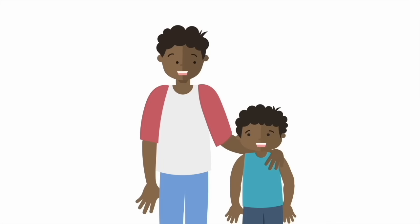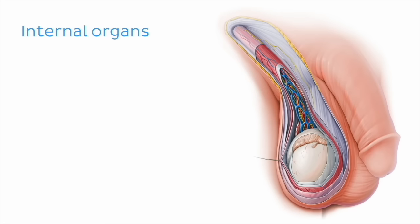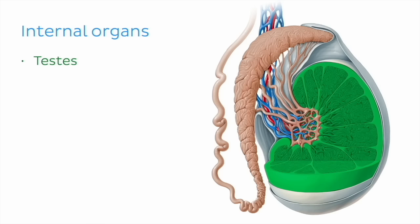Go ahead and give yourself a pat on the back as you've mastered the male reproductive system. Before you move on to the next tutorial, let's quickly summarize everything that we've learned today. We first covered the internal organs of the male reproductive system, starting with the testes, which are the male gonads responsible for producing sperm and testosterone.